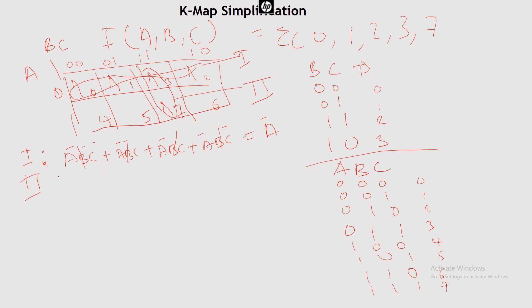Now for group 2: we write the two terms, for example ĀBC + ABC. Here A changes sign — A bar and A cancel — so we're left with BC. Others have zero, others have one one, so BC remains.